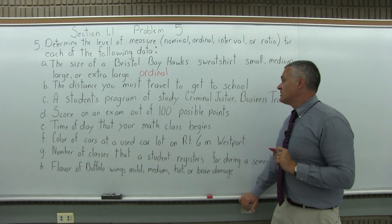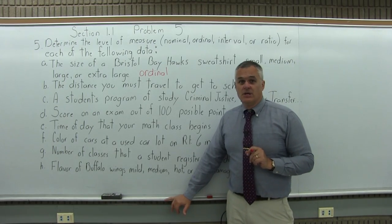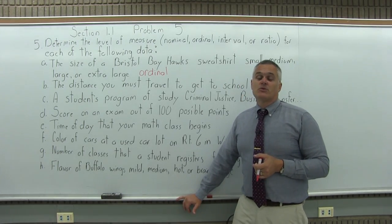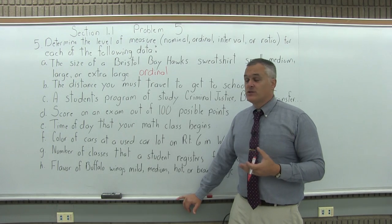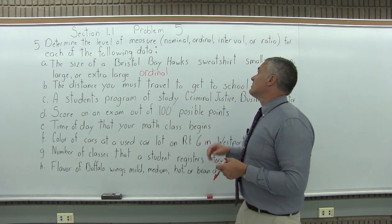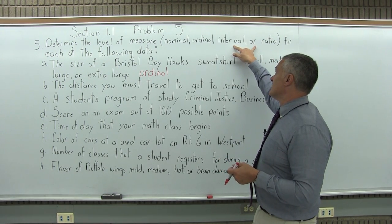B, the distance you must travel to get to school. So this is something that's going to be measured with a number, probably in miles. So once you get to numbers, it's one of the second two. If it's numbers, it's either interval or ratio.